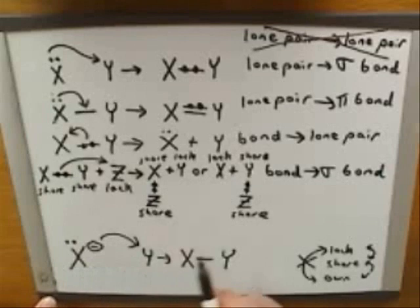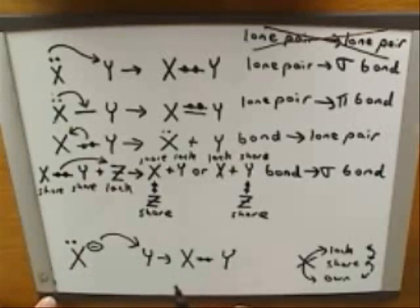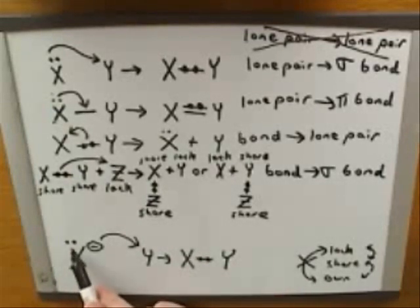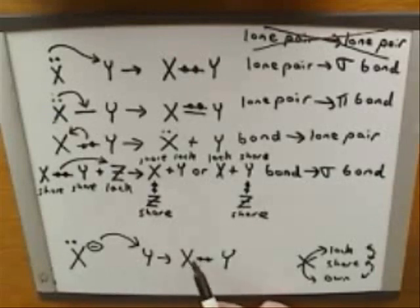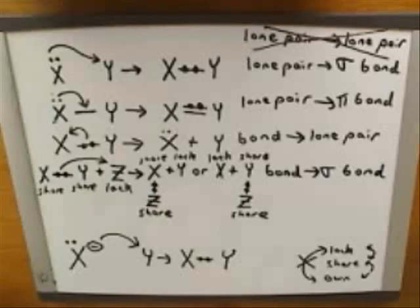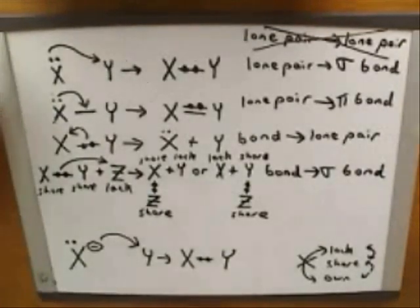We've even been drawing those in. And we can see here that X really did lose that lone pair — the lone pair that it had in the starting material it doesn't have in the product anymore. So again, the moral here is it's really pretty easy to interpret what the tail of an arrow means.